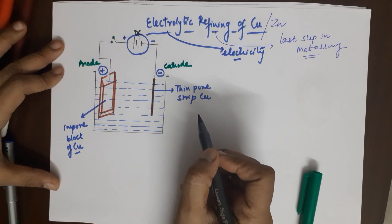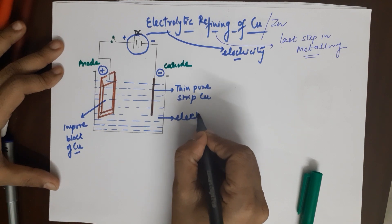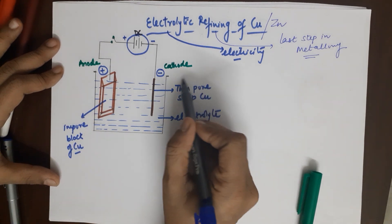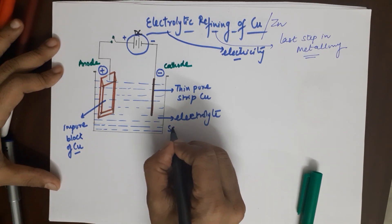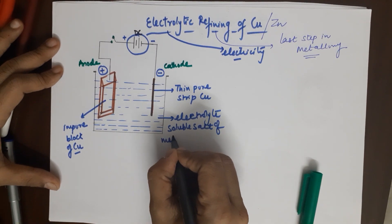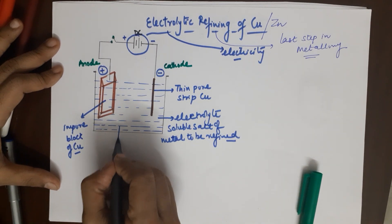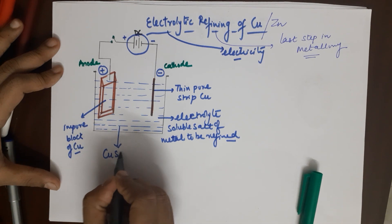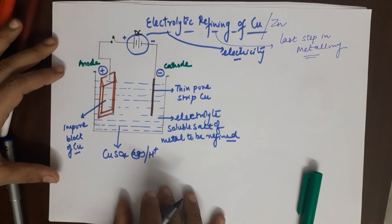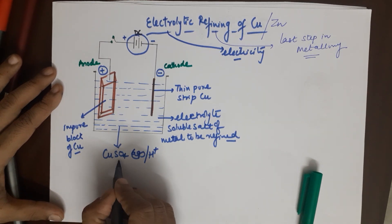When we begin with this process, you also require an electrolyte. The anode is your impure block of copper, cathode is your pure strip of copper, and the electrolyte has to be a soluble salt of the metal to be refined. I have taken copper sulfate aqueous solution. We add a little bit of acid for better conductivity and more solubility of copper sulfate.